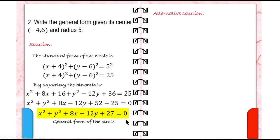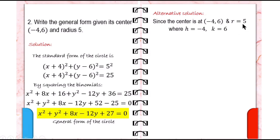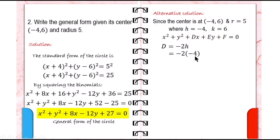Another solution is to solve for the values of d, e, and f. The center is at negative 4, 6, where h equals negative 4 and k equals 6, with r equals 5. We solve for d, which equals negative 2h, where h is negative 4. So negative 2 times negative 4 is positive 8 — d equals 8.